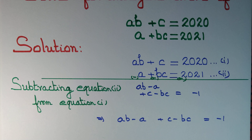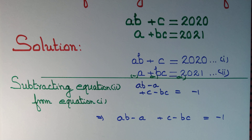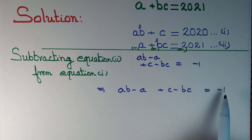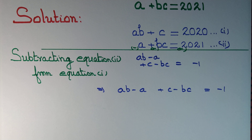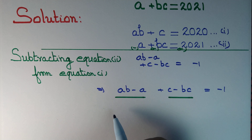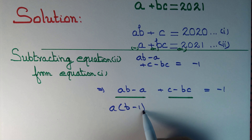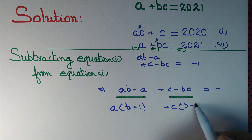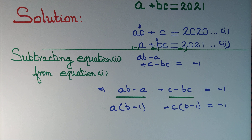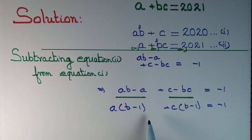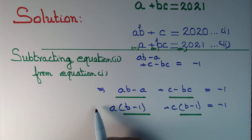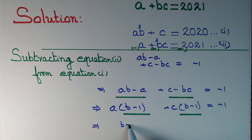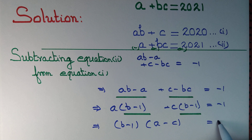Since we want a, b, c to be integers, we use the property that every non-zero integer has a finite number of factors. Can we factorize this expression? Taking 'a' common gives a(b - 1) - c(b - 1) = -1. We can take (b - 1) common again to obtain (b - 1)(a - c) = -1.